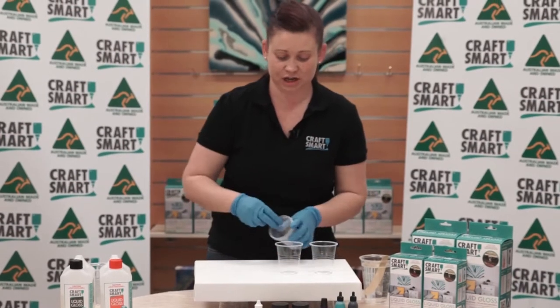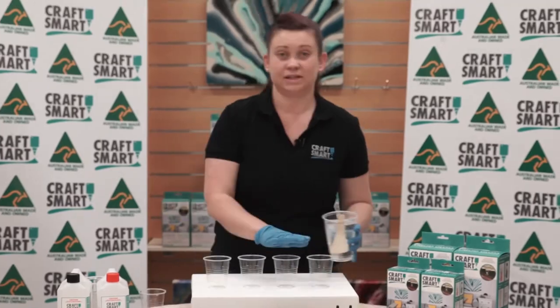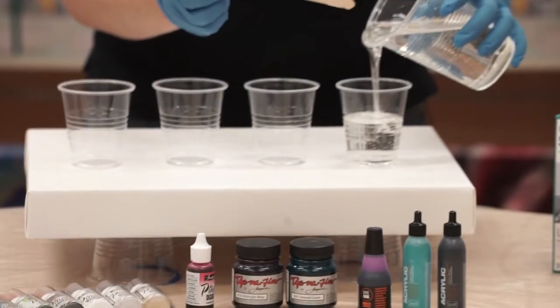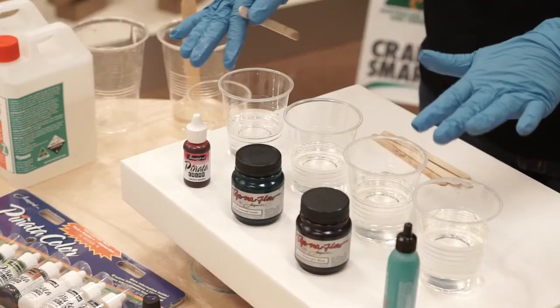Just have a quick look at the cup and make sure that you can't see any streaks. Pop a cup down for each color that you wish to use. We're going to separate it into each cup, the desired amount for each color. We're going to work with this color range today.